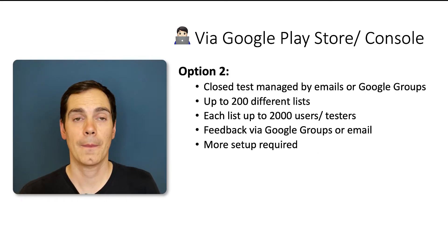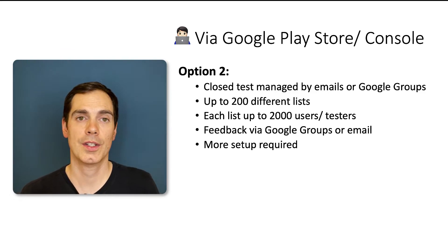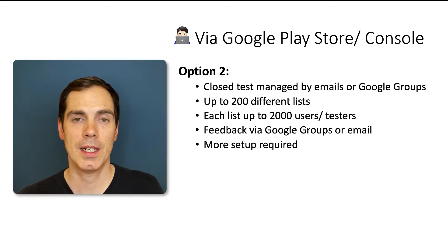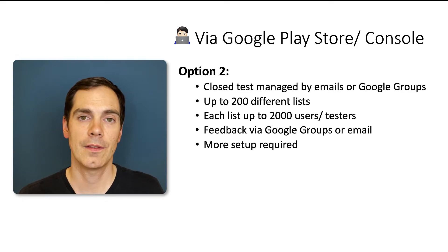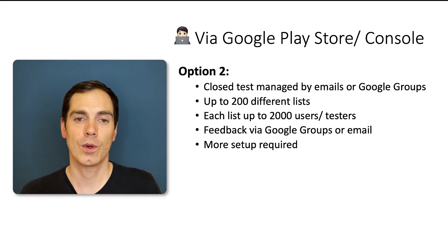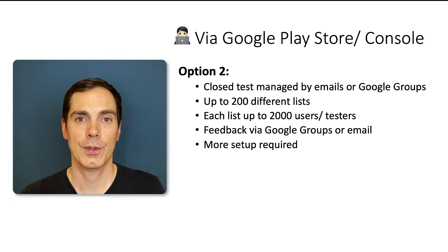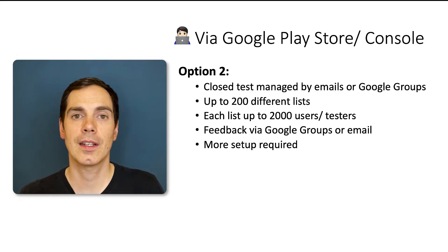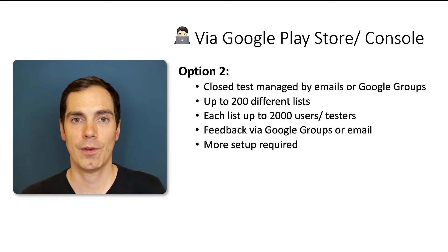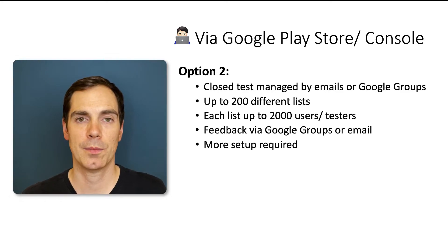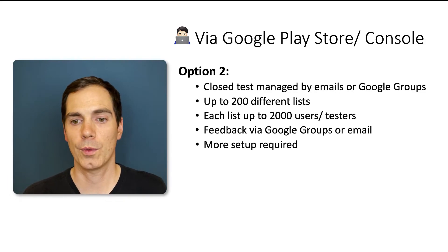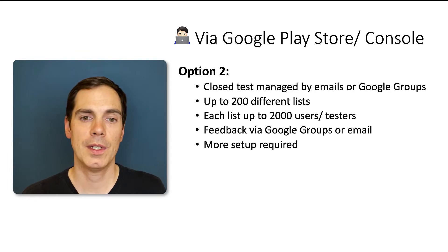Option two is a closed test managed by emails or Google Groups. You can set up up to 200 different lists and each list can contain up to 2,000 testers, so it's a big portion of users you can invite to your beta testing community. Feedback can be delivered from users via Google Groups or via email. However, there's one drawback: more setup is required because you need to find beta testers, invite them, send them emails, and they still have to click on a link in the email to get the beta version. There are many steps where users can opt out, because users tend to be lazy and don't want to click more links or go to different pages.